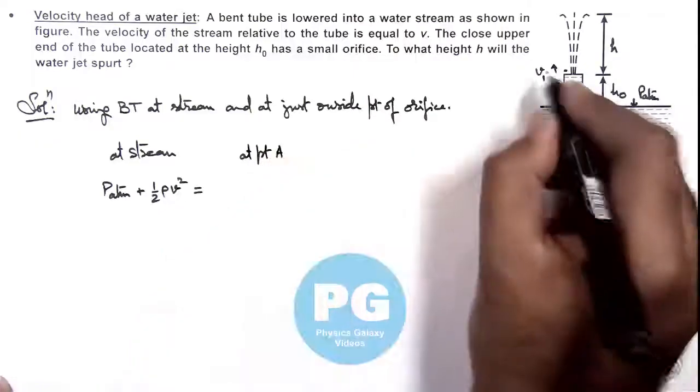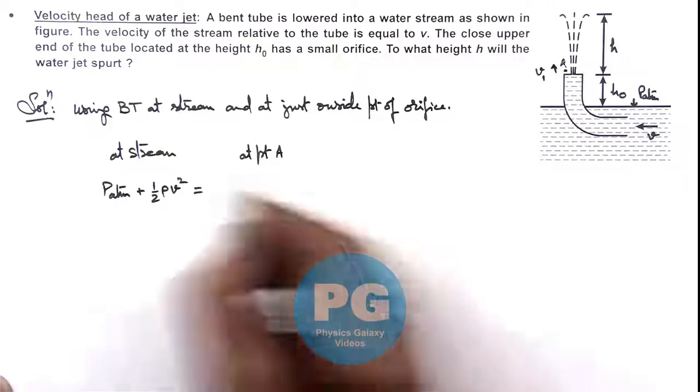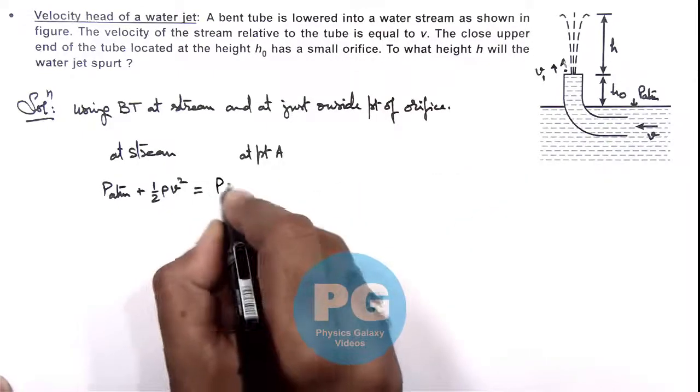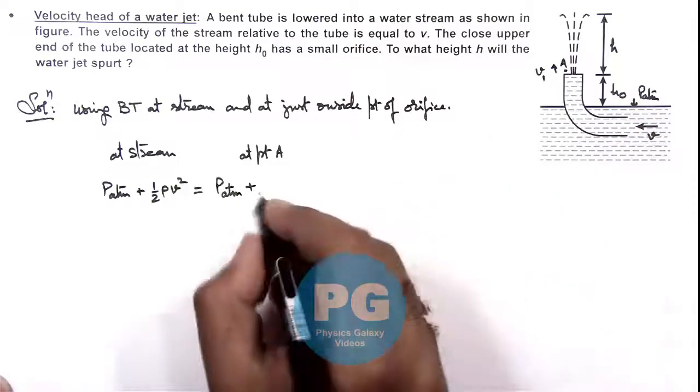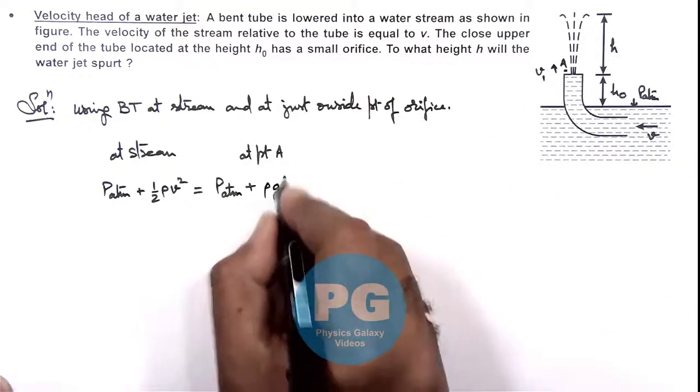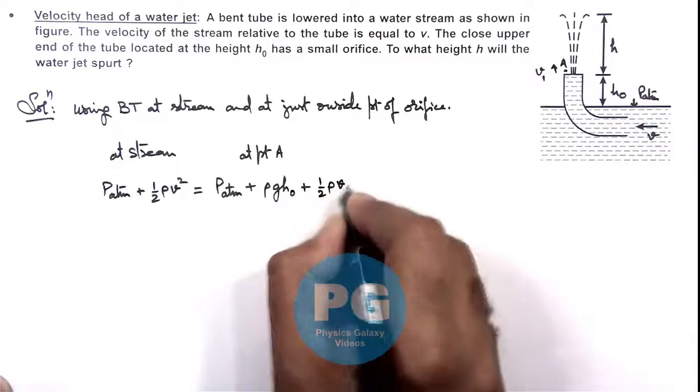at point A which is located over here. We can write the kinetic pressure energy is P_atmospheric plus due to work done by gravity, the gravitational potential energy is rho g h_not, plus the kinetic energy is half rho v_1 square.